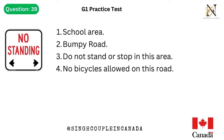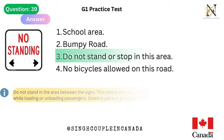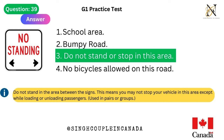Question 39. This traffic sign means: 1. School area. 2. Bumpy road. 3. Do not stand or stop in this area. 4. No bicycles allowed on this road. Answer is 3. Do not stand or stop in this area — do not stand in the area between the signs. This means you may not stop your vehicle in this area except while loading or unloading passengers. Used in pairs or groups.